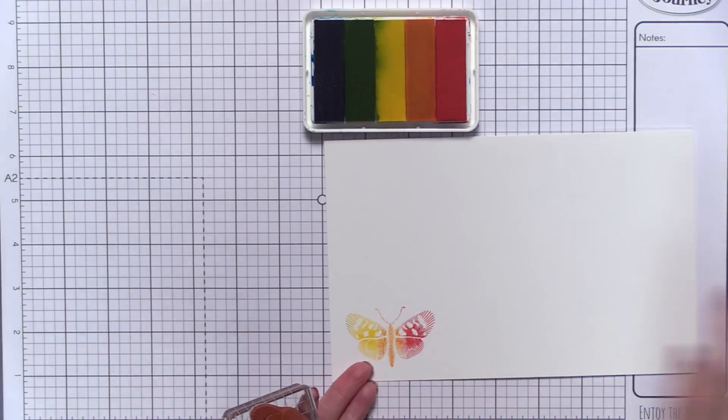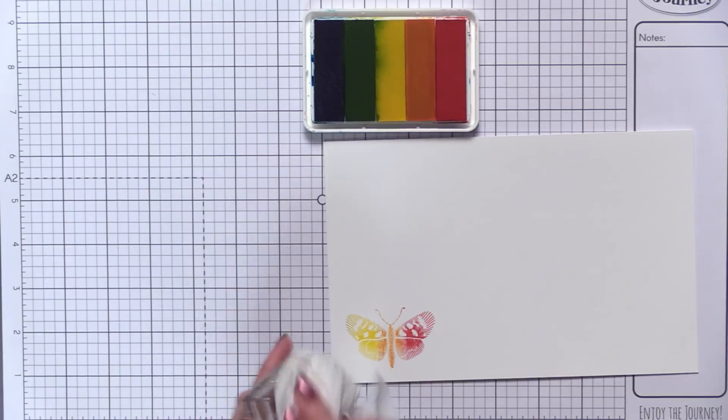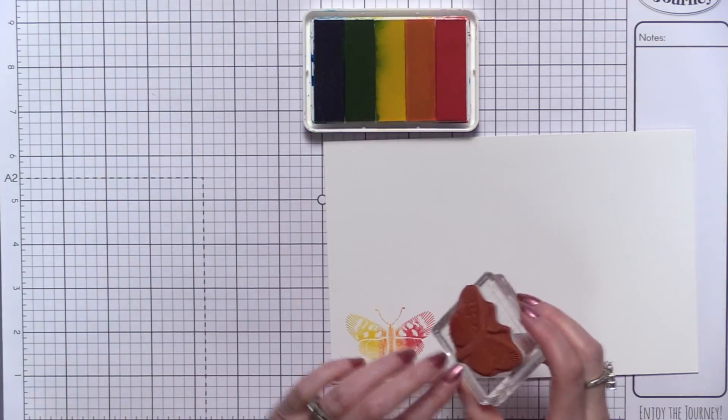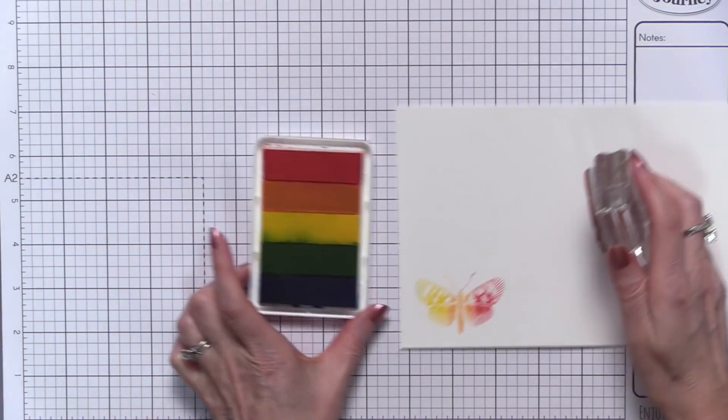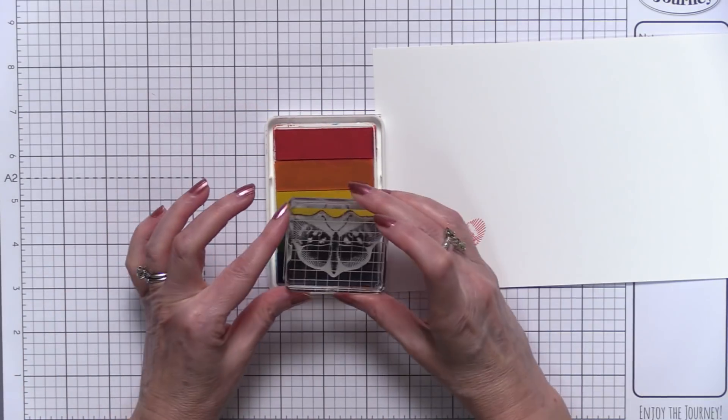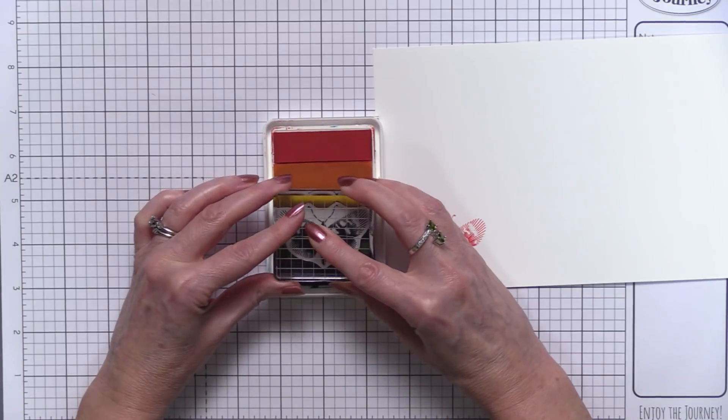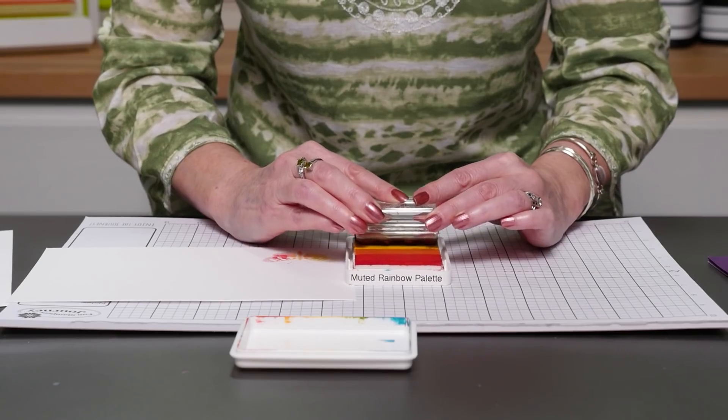Now that's with the color moving across the wings. Let's turn the ink pad and show what it looks like with the color moving up the butterfly. So we're going to put the bottom of the butterfly into the blue and the top of the wings is going to go up in the yellow. We're going to do the same thing, moving the stamp ever so slightly up and down to blend out those lines.